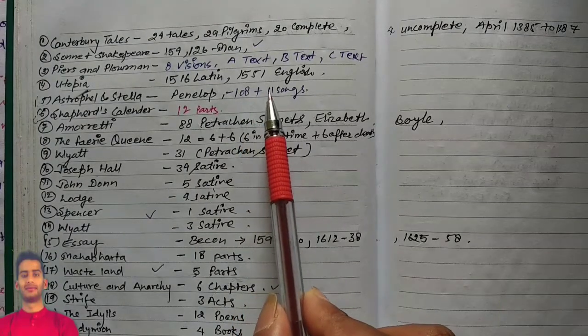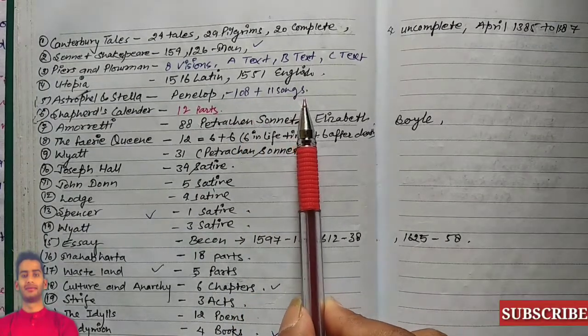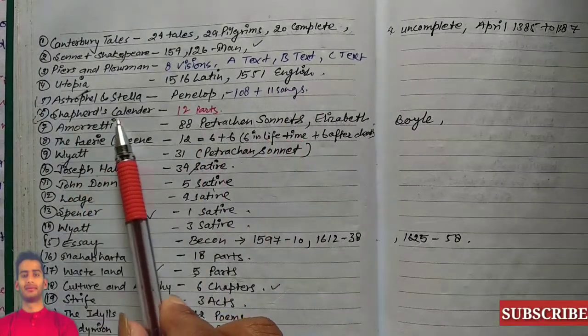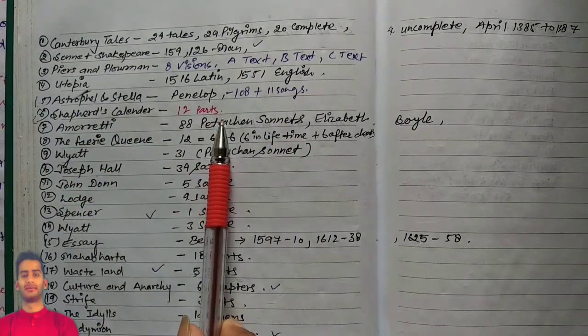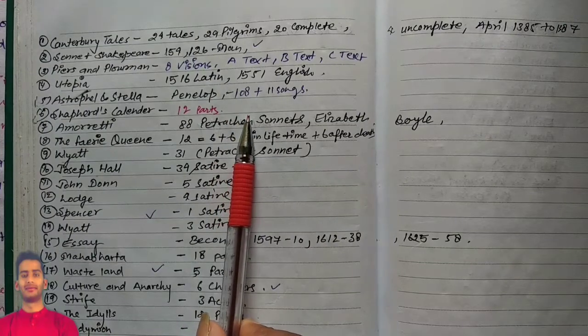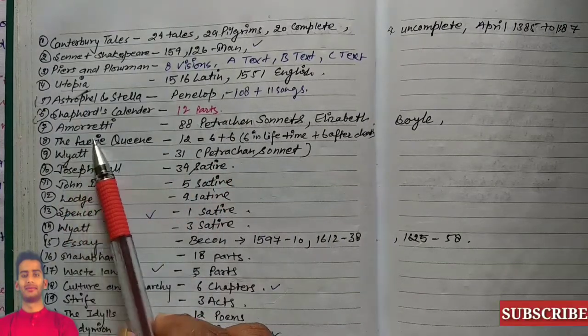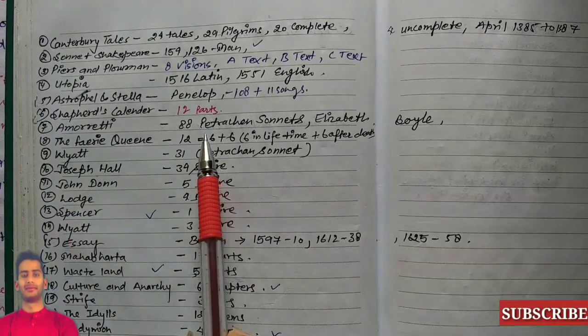Shepherd's Calendar: it is written in 12 parts and it represents 12 months. Amoretti consists...